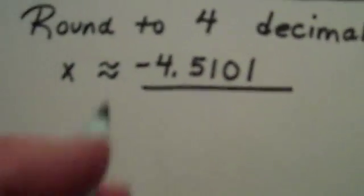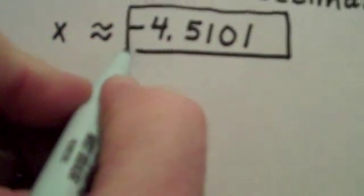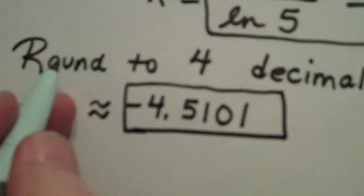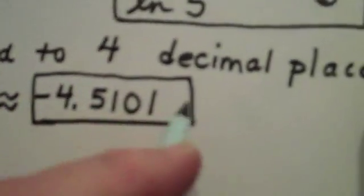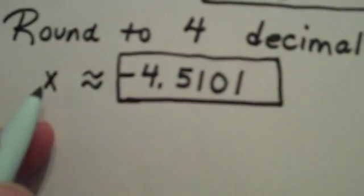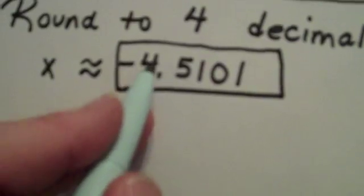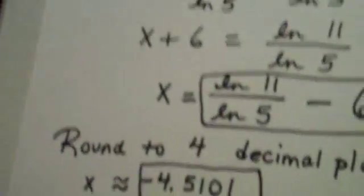The number that came after this one was a zero. If it had been 5, 6, 7, 8, or 9, I would have rounded up, but since it wasn't, I just truncated. There is my correct answer. We have rounded it to four decimal places: x is approximately negative 4.5101.